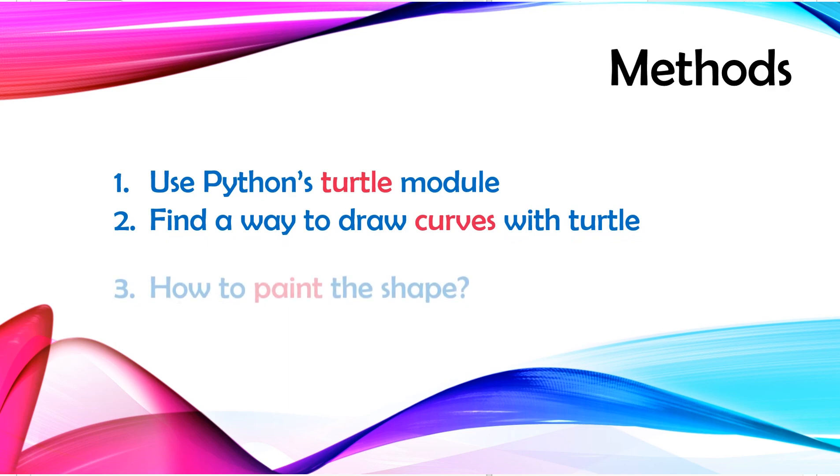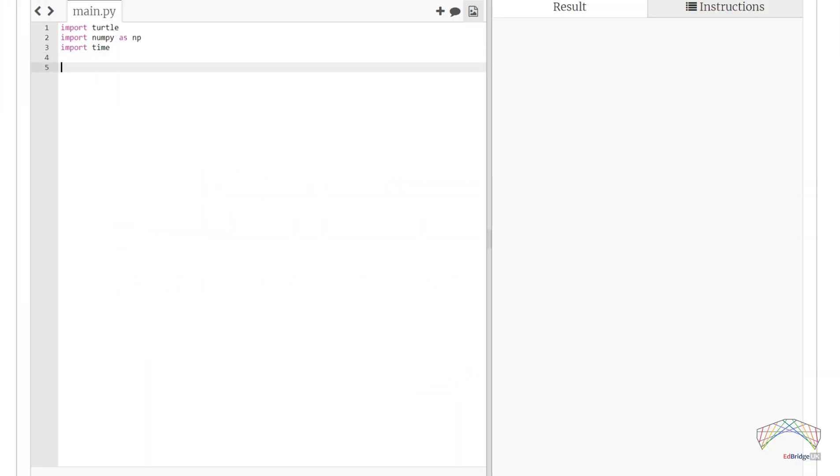If you have worked with turtles, you would know that it only travels in straight lines. I mean, at least the turtle library in Python. We would need to first create a turtle object using the creator function turtle.turtle. Mind you that Python is sensitive to letter cases. The small turtle is the module's name, while the big turtle is the class name.